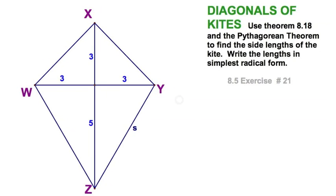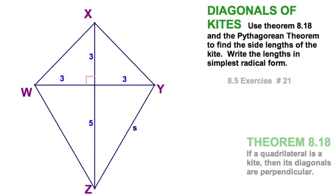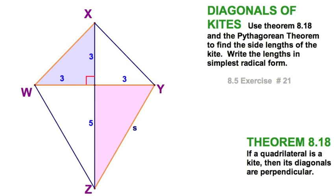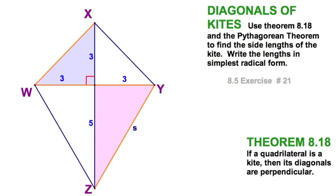Let's see if we can solve for the sides of this kite. We have a hint: use Theorem 818. That tells us that the diagonals are perpendicular — right angle right there. And of course you can see we've got these right triangles. Two of these right triangles are congruent — I see this one and this one — and the other two are the same. So let's solve for the missing sides.